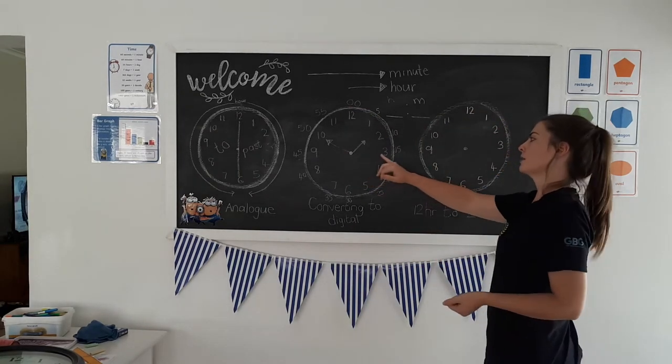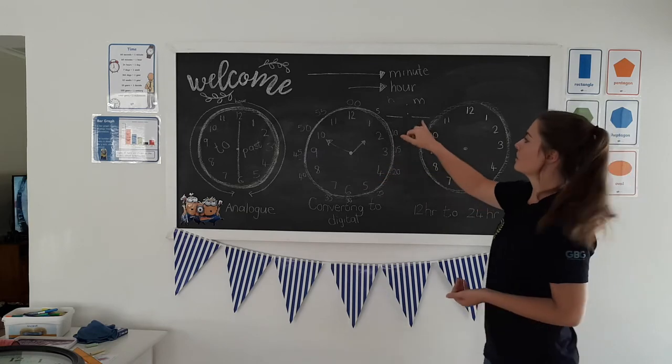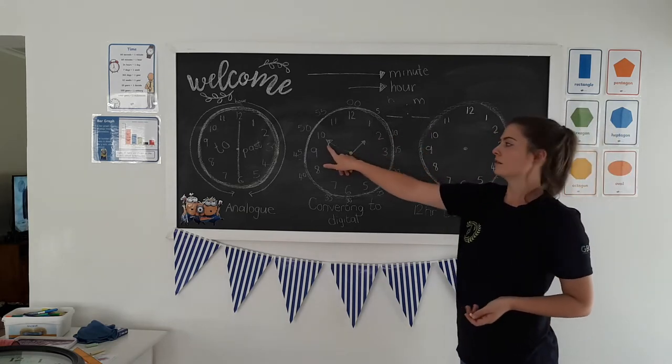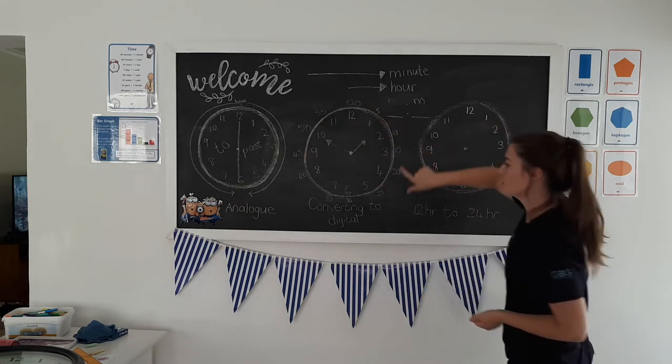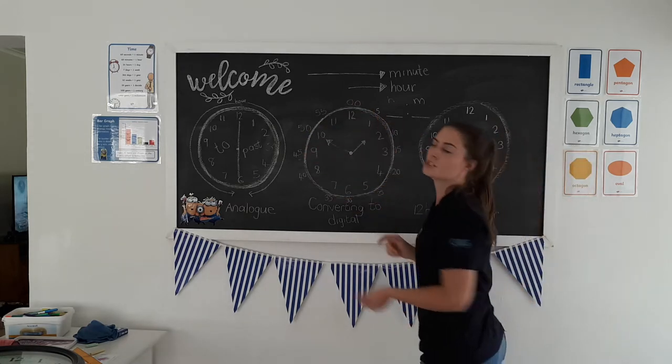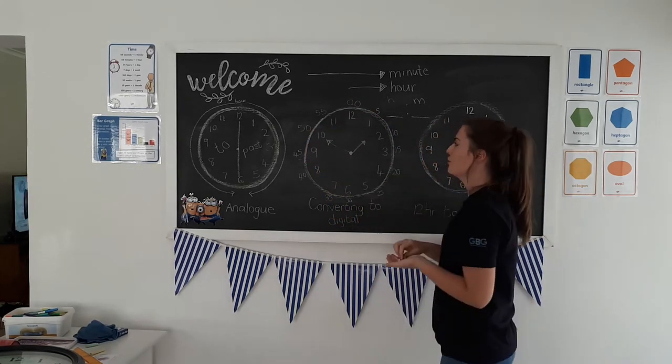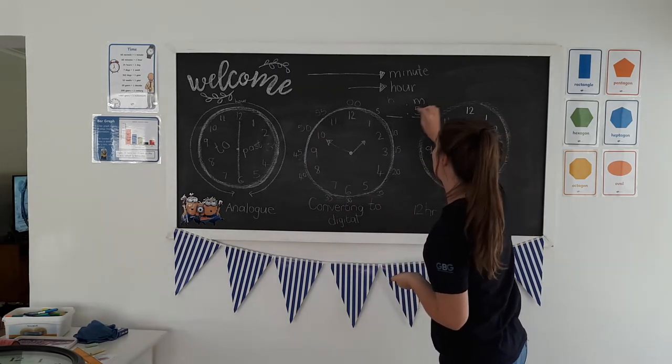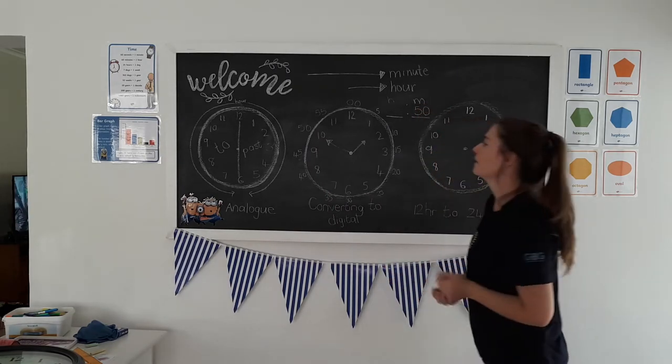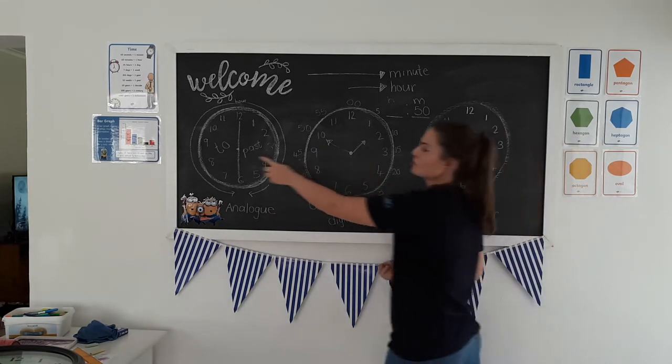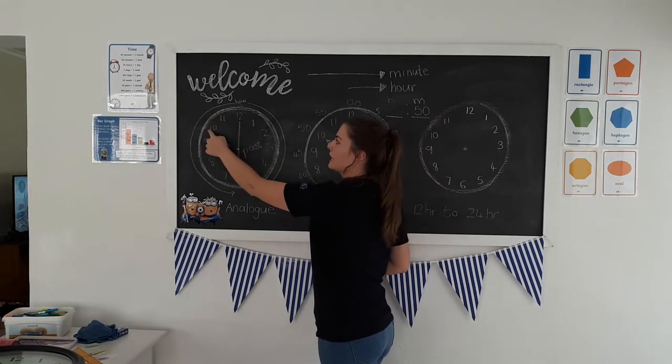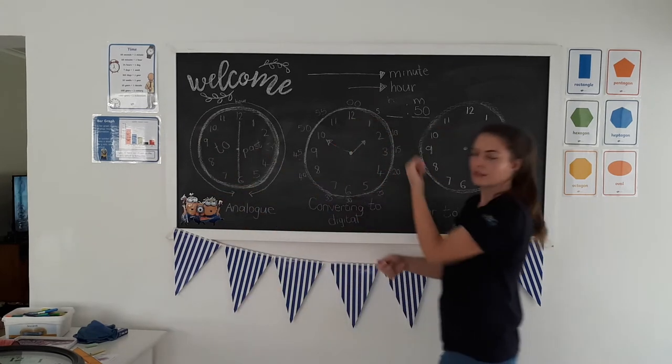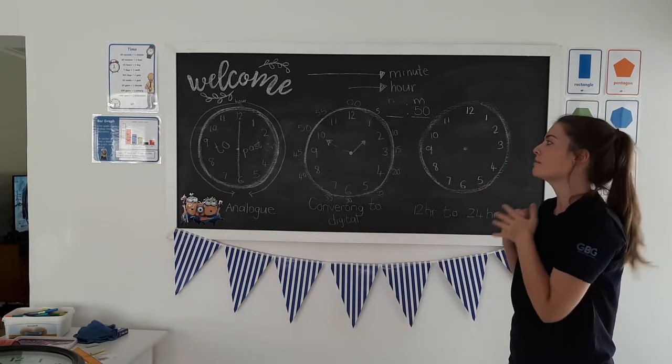So this time, if I look at it, starting with the minutes, the minute time is going to the ten, which in digital time we write as fifty. If we went back to this clock, that would mean it is five, ten to the next hour.